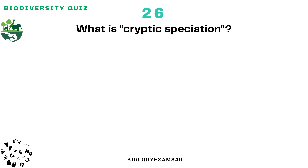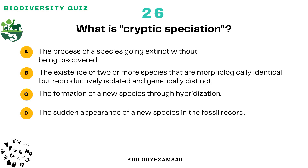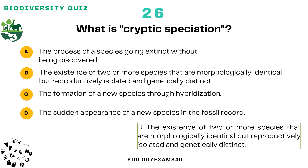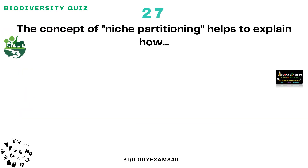Question number 26: What is cryptic speciation? Option A: The process of a species going extinct without being discovered. Option B: The existence of two or more species that are morphologically identical but reproductively isolated and genetically distinct. Option C: The formation of a new species through hybridization. Option D: The sudden appearance of a new species in the fossil record. The correct answer is: cryptic species is the existence of two or more species that are morphologically identical but reproductively isolated and genetically distinct.